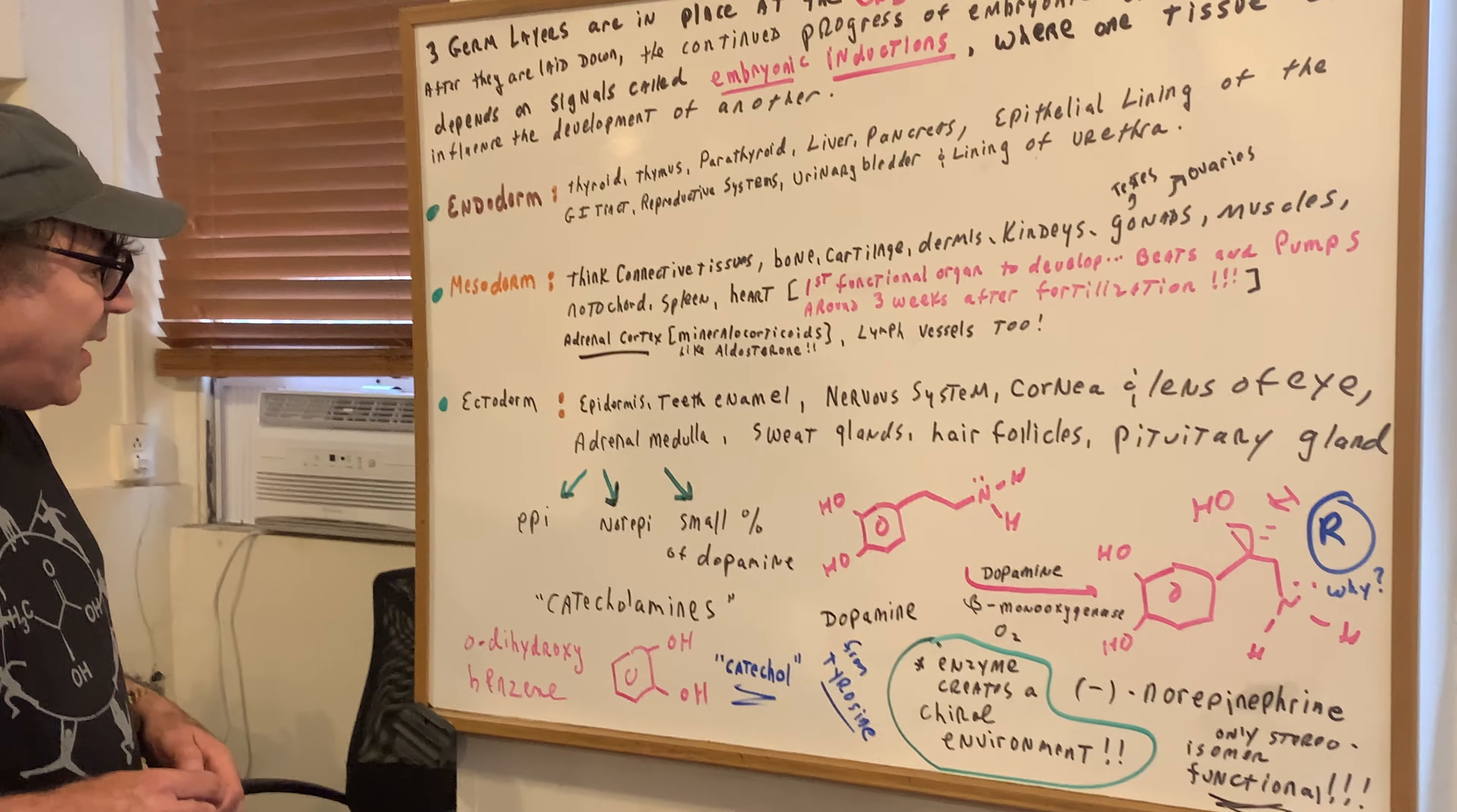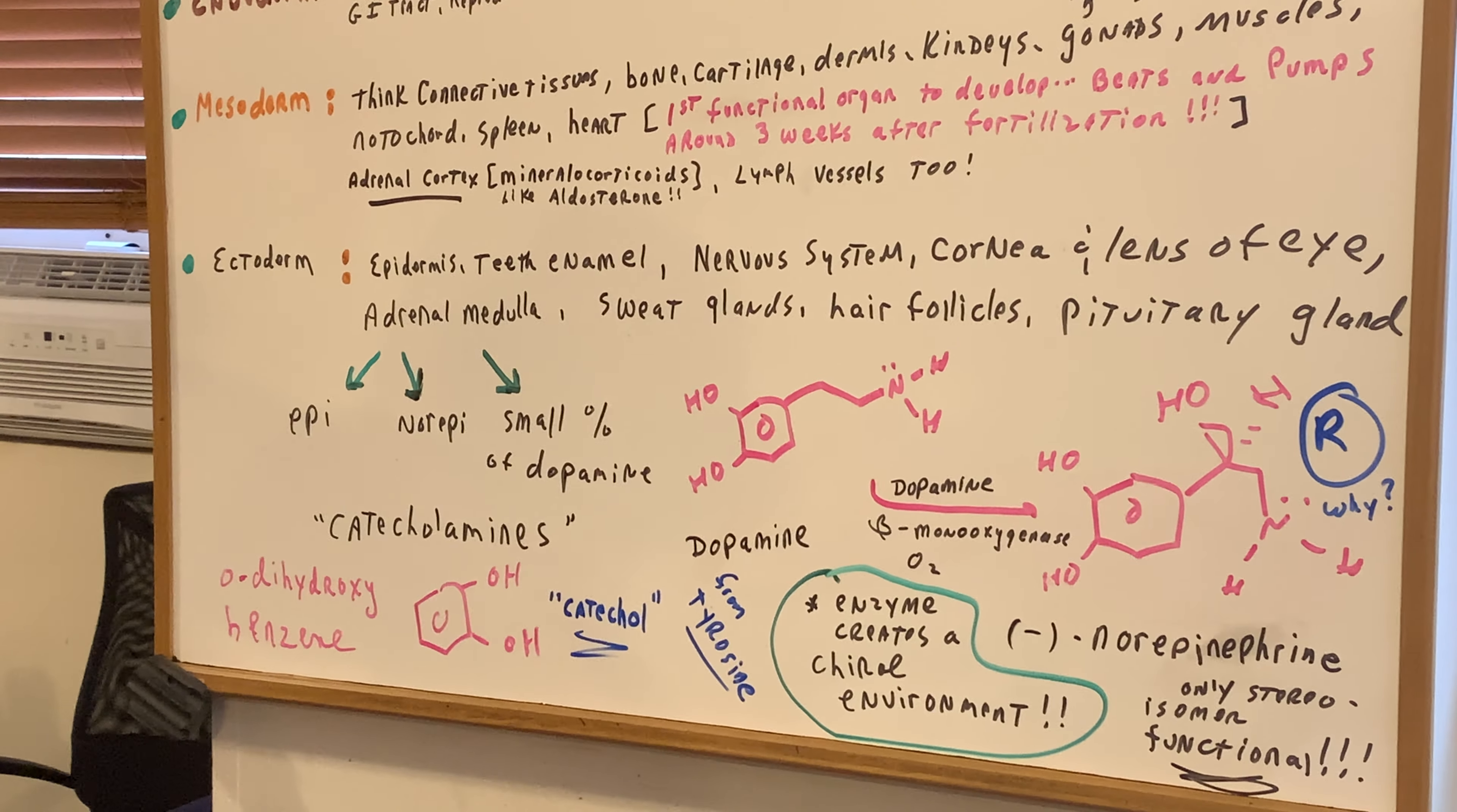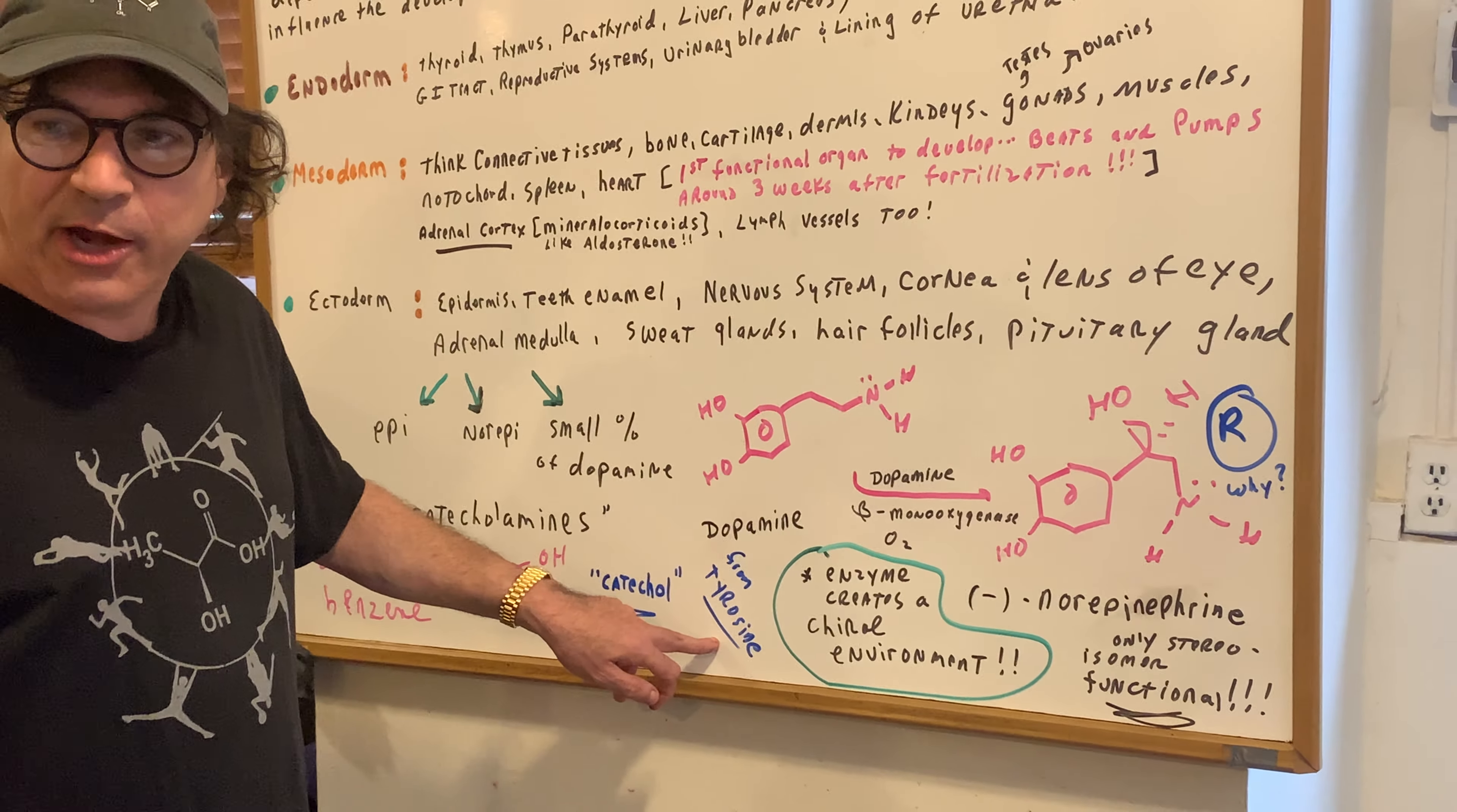Now, these catecholamines, which is a sure-bet question, you're going to know the three examples, are actually derived from a molecule called catechol. Also, catechol is nothing more than O-dihydroxybenzene, meaning ortho-dihydroxybenzene. As you can see, I gave an example, is that these species, these molecules, are derived from an amino acid called tyrosine.